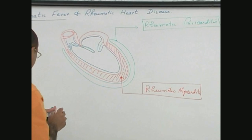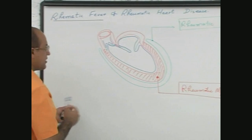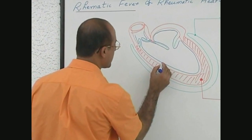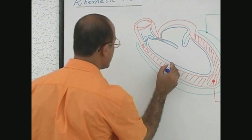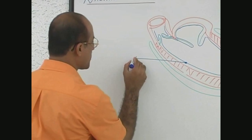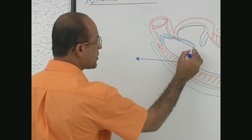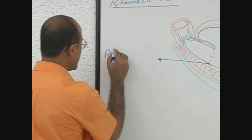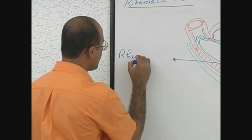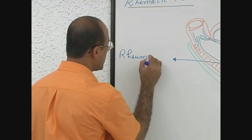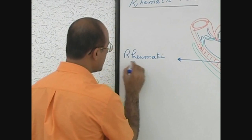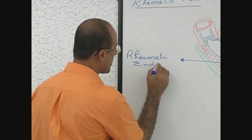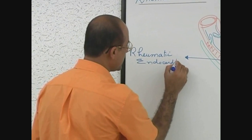If the rheumatic process involved the endocardium, and of course even the endocardium over the valve, we call this condition rheumatic endocarditis.